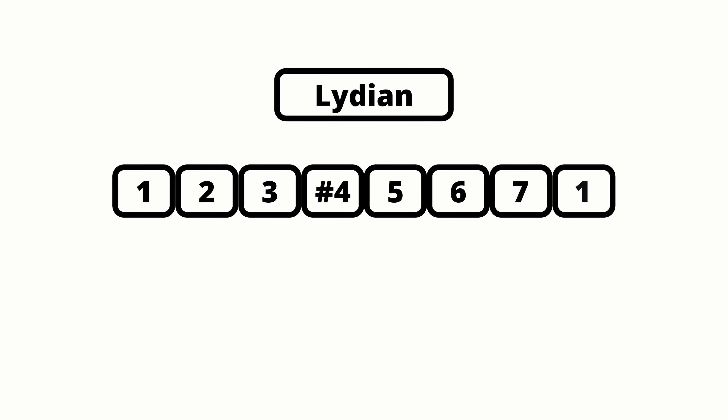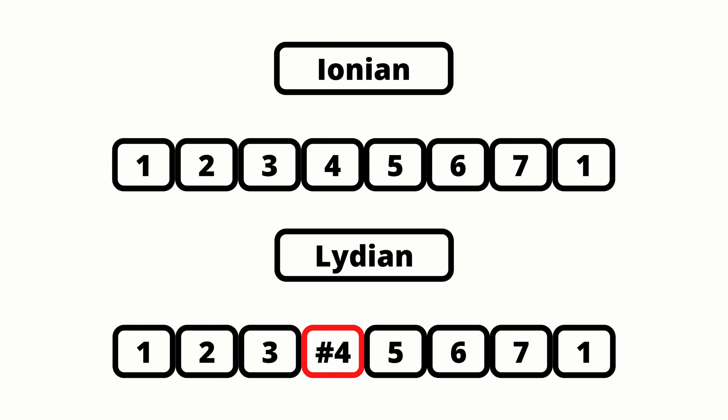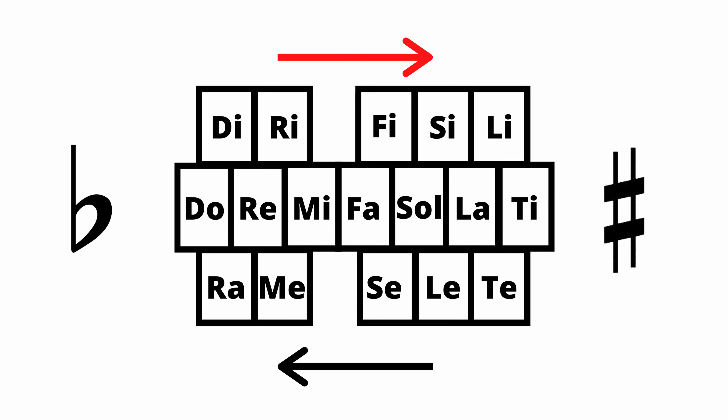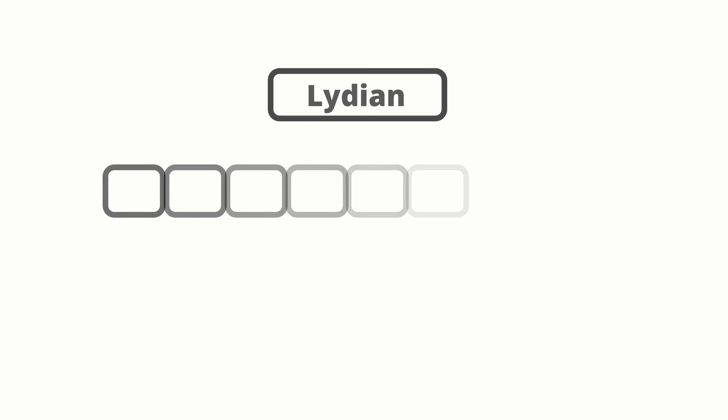Next is the Lydian mode. The formula for the Lydian mode is 1, 2, 3, sharp 4, 5, 6, 7, 1. Similarly to the previous mode we learned, the only difference between the Lydian mode and the major scale is the sharpened 4th degree. And in this case, since we have a sharp note, we will be replacing Fa with Fi.